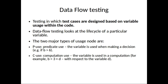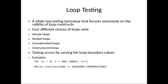Data flow testing designs test cases based on variable usage within the code and looks at the life cycle of a particular variable. The two major types of usage are: P-use (predicate use), where the variable is used when making a decision — for example, if B is greater than 6 — and C-use (computation use), where the variable is used in computation — for example, B equals 3 plus D.